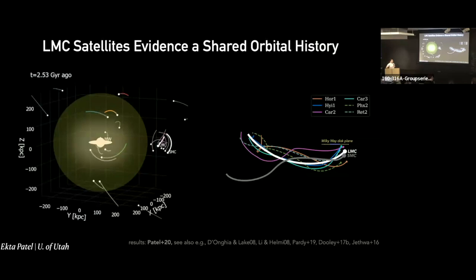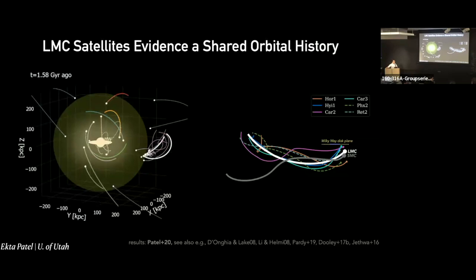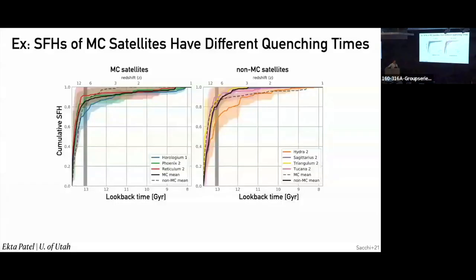Question from Cecilia Mateo via video: LMC satellites quench about 600 million years after non-LMC counterparts — does that come from simulations or observations? These are observations — HST observations of these ultra-faint dwarfs. That's very impressive because measuring that difference in age at those very old ages is remarkable. I encourage you to look at that paper.